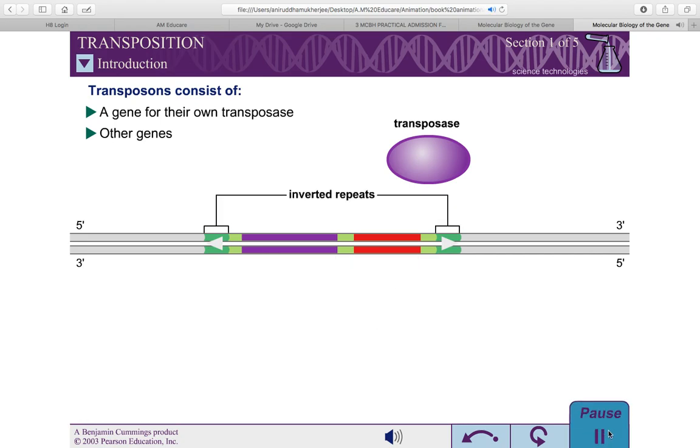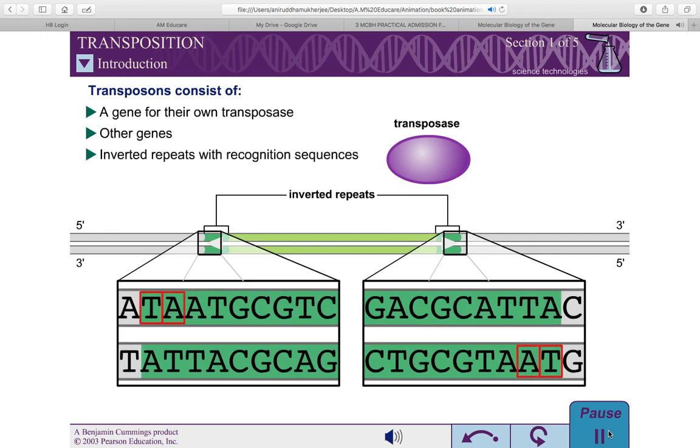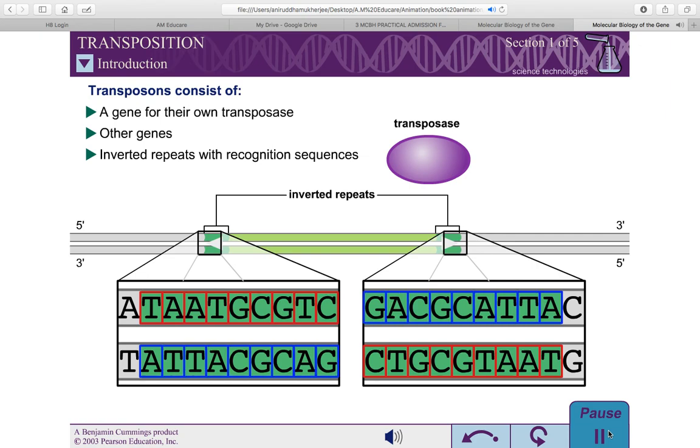The very ends of a transposon's DNA are arranged as inverted repeats. These inverted repeats range from about 25 to a few hundred base pairs and carry the recognition sequences for transposase binding.